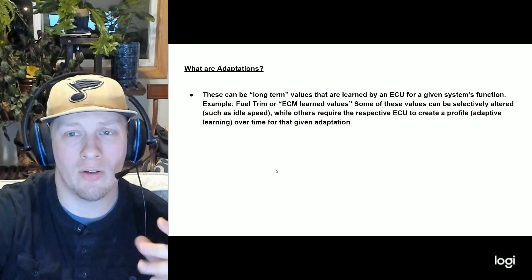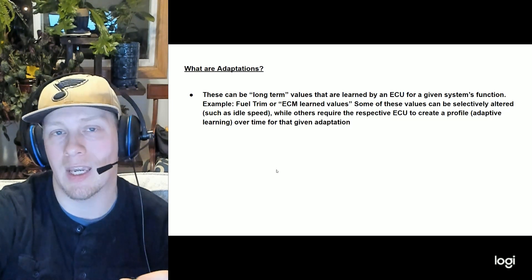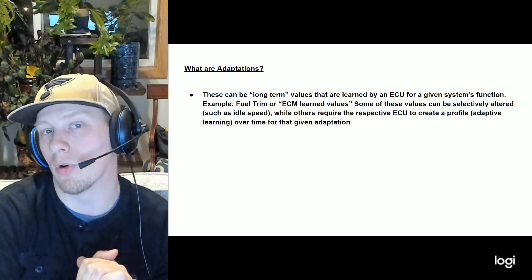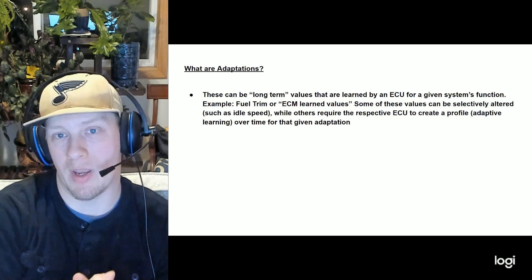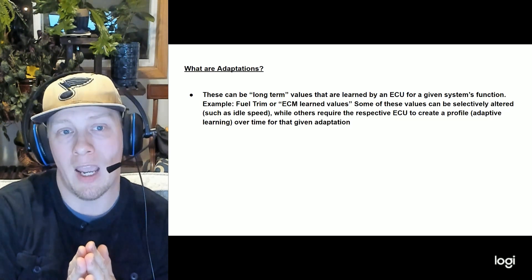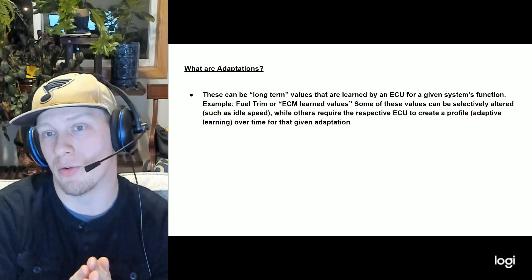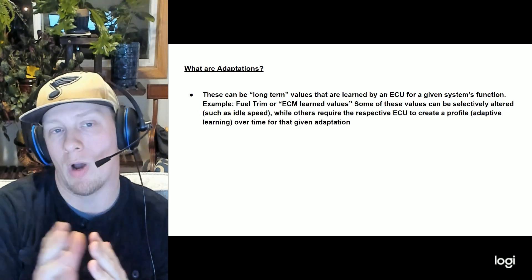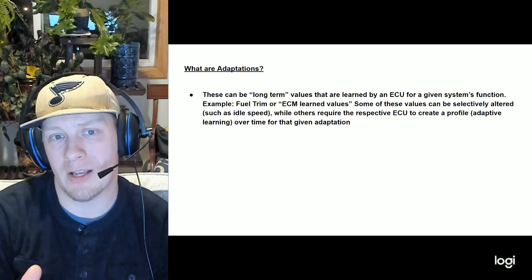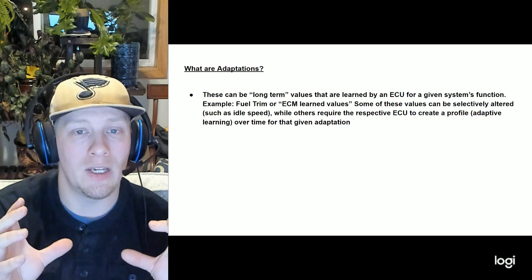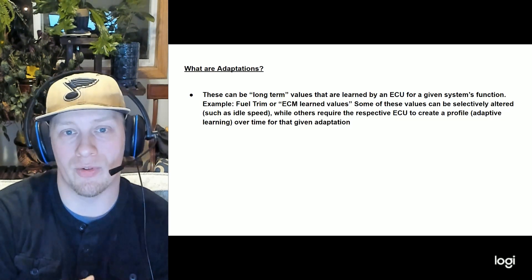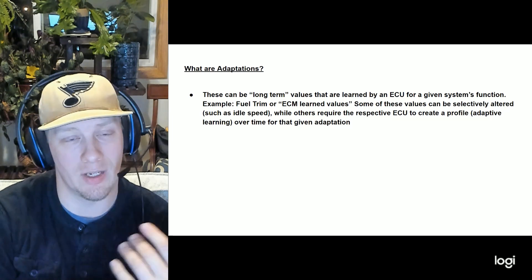Now moving to adaptations — I look at adaptations as long-term learned values for a given system. A good example would be fuel trim: over a long period of time, the ECM learns fuel trim and how the vehicle behaves under different loads — wide-open acceleration, idling, and so on. It forms a composite that allows it to precisely control how the vehicle runs.